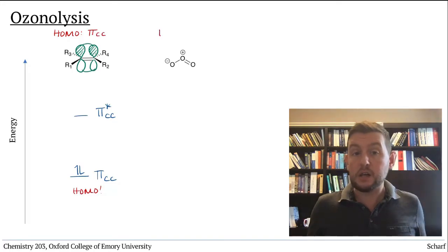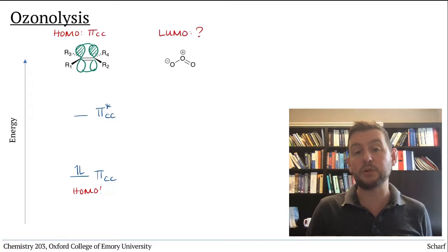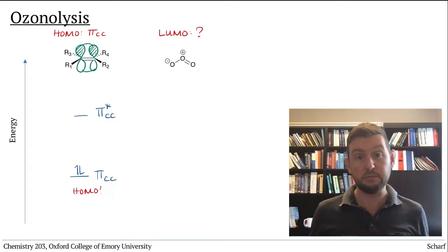So that implies that in ozonolysis, the LUMO of ozone is probably the most important orbital. So what is the LUMO of ozone?